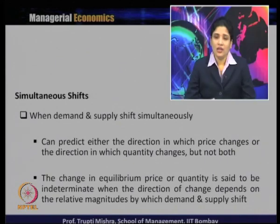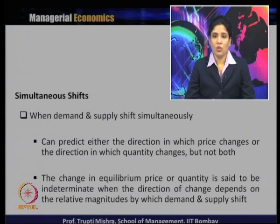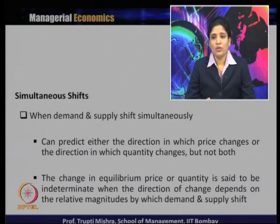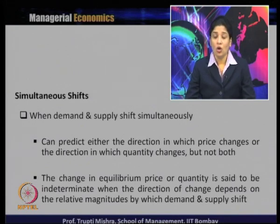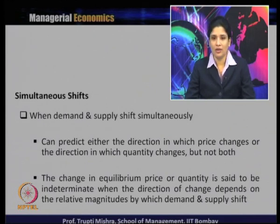How we are going to summarize this — either in what direction price changes or in what direction quantity changes — but we cannot predict the direction for both price and quantity when there is a simultaneous shift in demand and supply. The change in equilibrium price or quantity is said to be indeterminate when the direction of change depends upon the relative magnitude by which demand and supply shift.